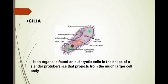The next one is cilia. Cilia is an organelle found on eukaryotic cells in the shape of a slender protuberance that projects from the much larger cell body.